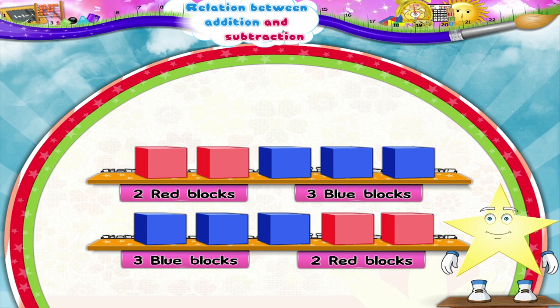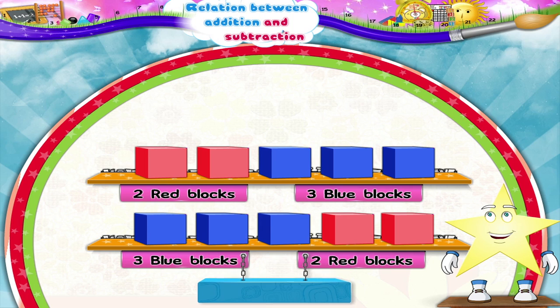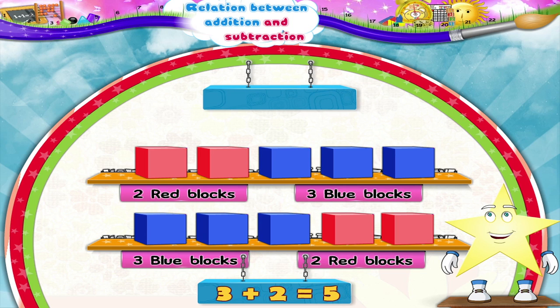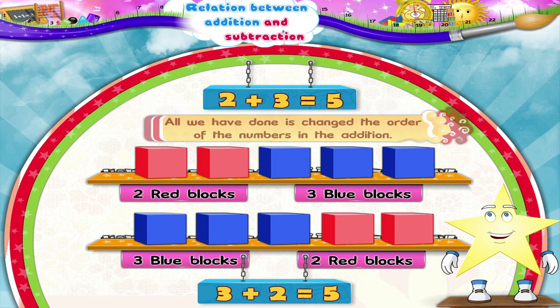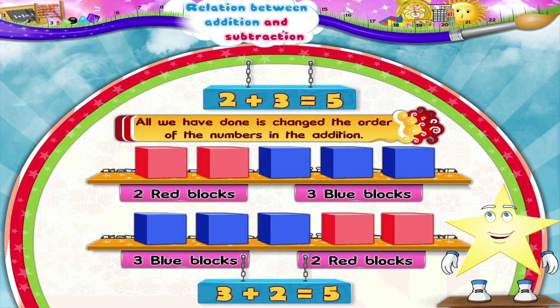So, Starry, three plus two equals five. All we have done is change the order of the numbers in the addition.